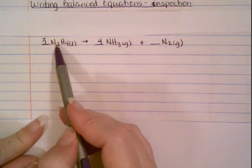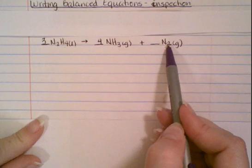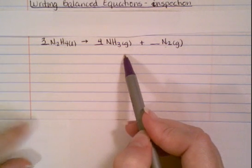So now on the left, I have 6 nitrogens. On the right, I have 4 nitrogens plus 2, which is 6. So this equation is balanced.